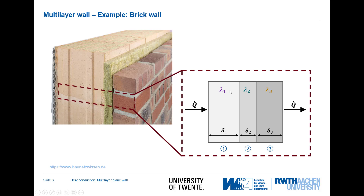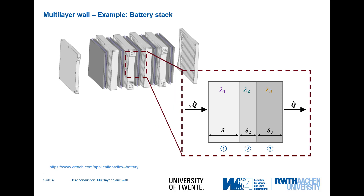If we look at this in a schematic way, we have three different layers of different properties, and the important thermal property for us is the thermal conductivity. We are interested in the heat loss — q-dot — which is the heat transferred through the entire wall. We can replace the wall example with other examples, such as a battery stack, where multiple layers of different materials occur and the same question applies: what is the heat flux through this multi-component wall?